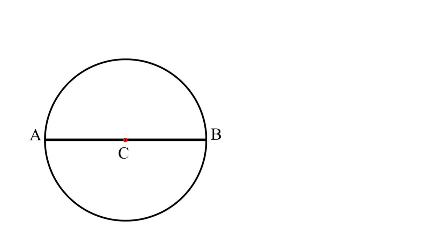Mark a point somewhere else on the circumference of the circle. Doesn't matter where. I picked this convenient point and labeled it D. Join AD and DB to create this triangle.